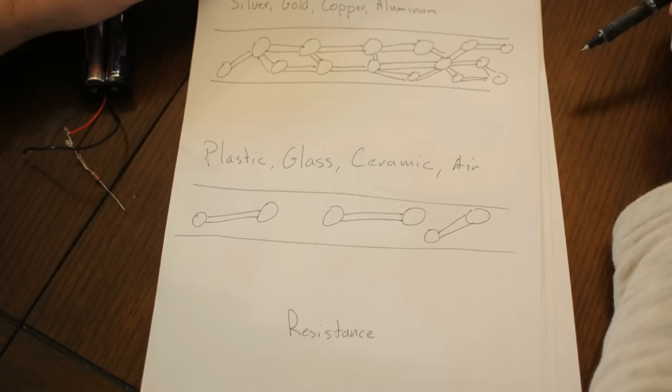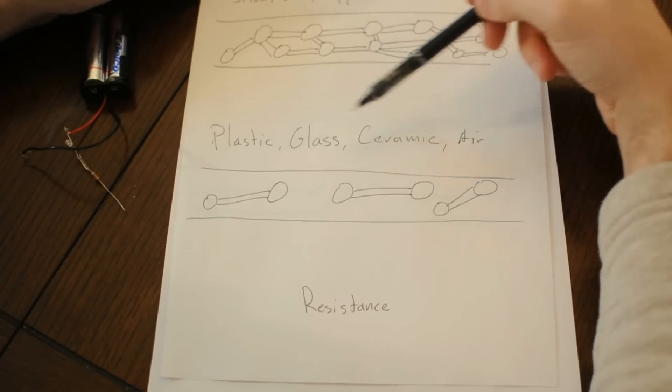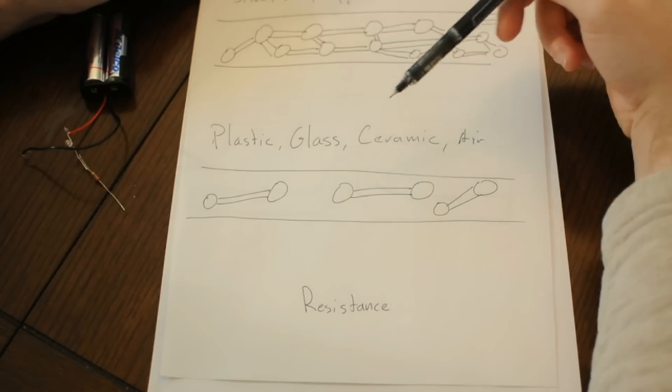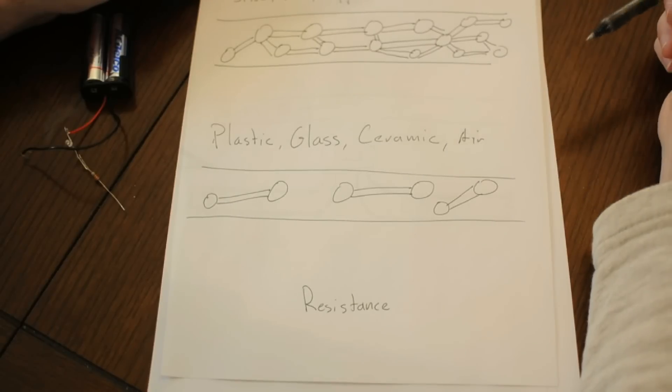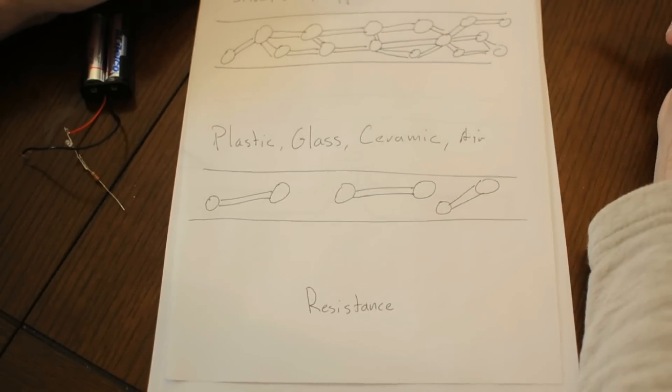Additionally, we don't want the electrons to cheat and avoid doing their work, so we use insulators to keep them on the path and prevent them from going elsewhere. So that would be like air, plastic, glass—they don't have a lot of free spots for the electrons to hop through.